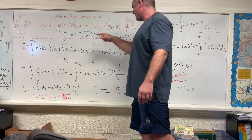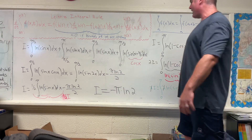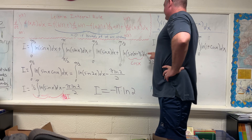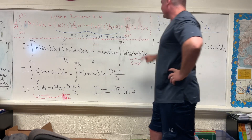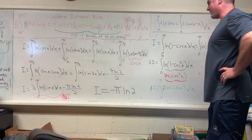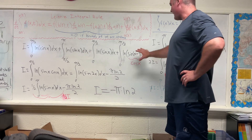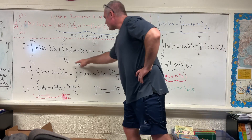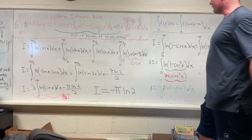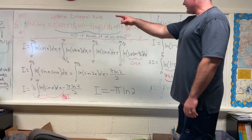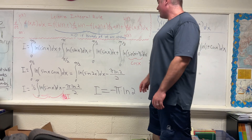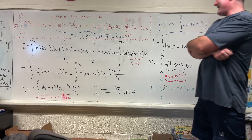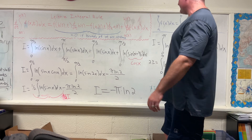Next, I make a substitution to get the same bounds of integration. So I is equal to the integral from zero to pi/2 of ln(sin x) dx plus the integral from zero to pi/2 of ln(sin(x + pi/2)) dx — that second integral comes from the substitution u = x - pi/2. And since sin(x + pi/2) is simply cos x, we have the integral from zero to pi/2 of ln(cos x) dx.